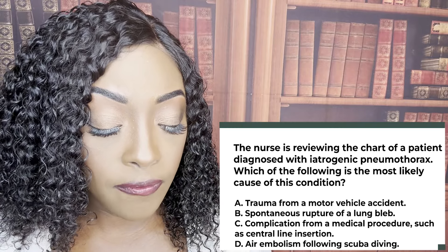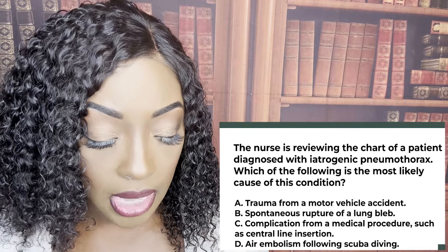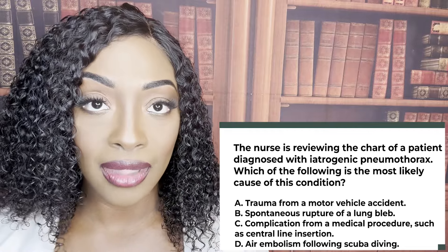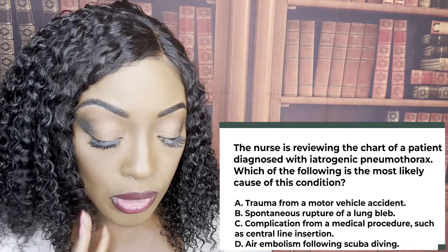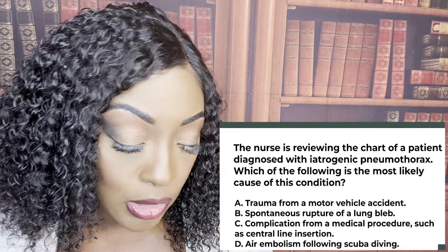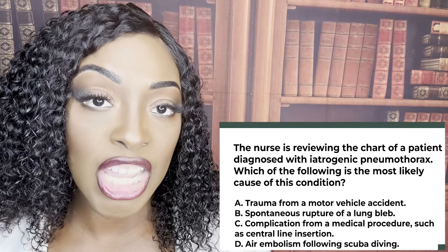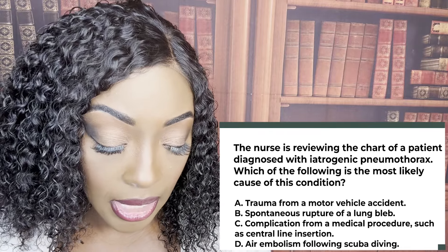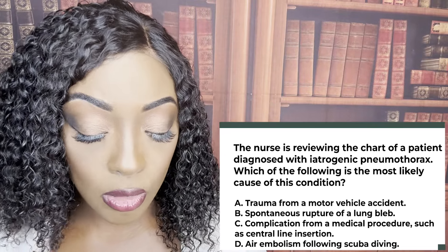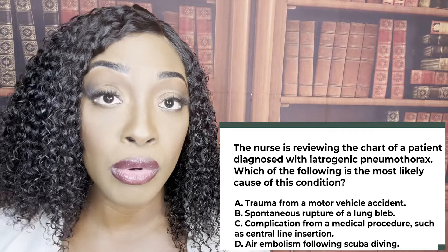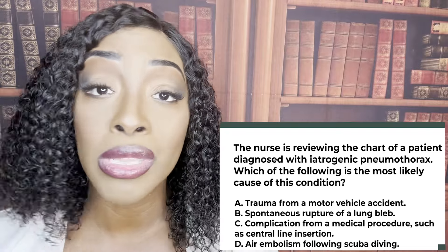The wrong answers: A, trauma from a motor vehicle accident — that's a traumatic pneumothorax. B, spontaneous rupture of a bleb — that's a spontaneous pneumothorax. D, air embolism following scuba diving — that's actually not a type of pneumothorax at all; it's an arterial gas embolism (AGE). For this question, the correct answer is complication from a medical procedure. Remember, with iatrogenic pneumothorax, the procedure that caused the pneumothorax was unintentional.